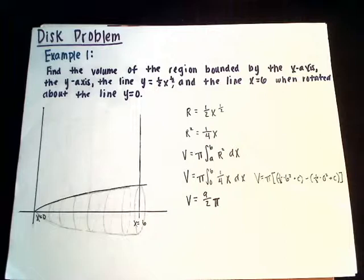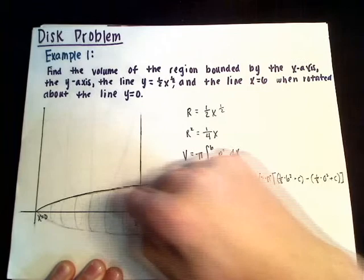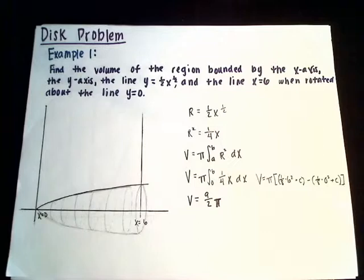Next, determine the region that is being rotated. To do so, identify the area enclosed by the equations and the bounds, which you can see is right here. After you have identified the area, it's a good idea to shade it in so you don't have to look for it later.